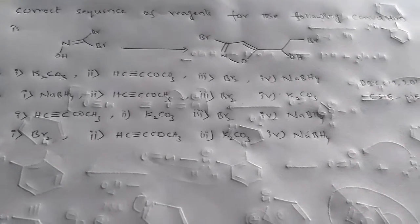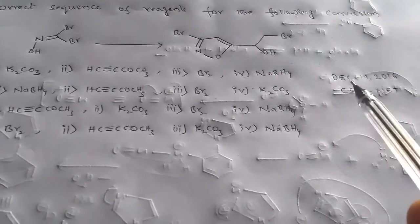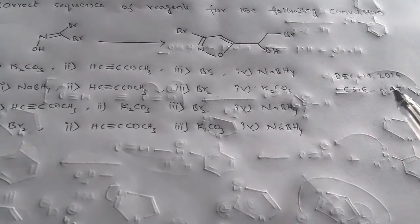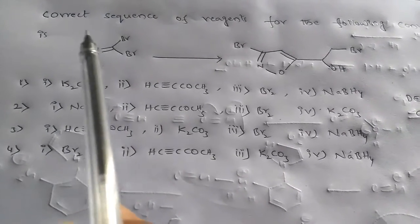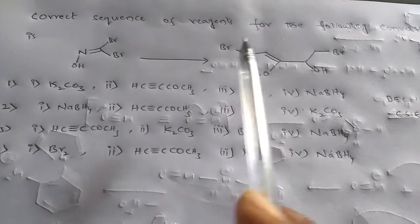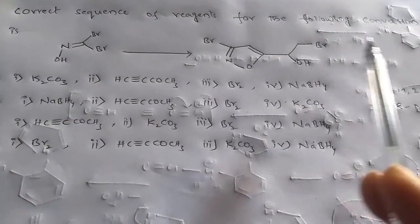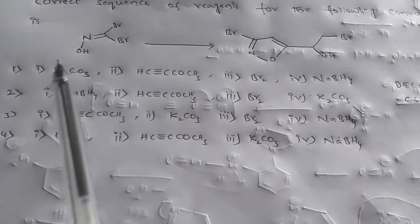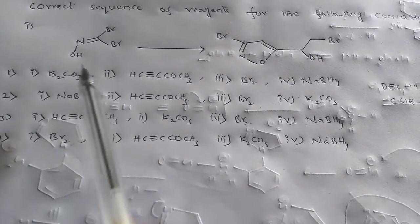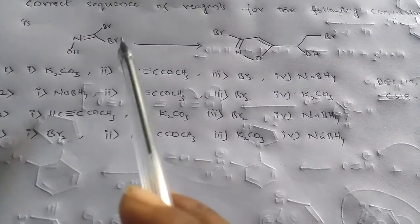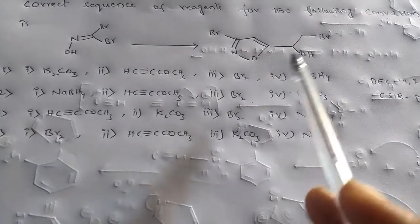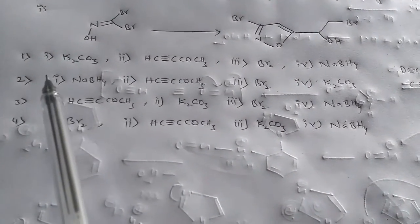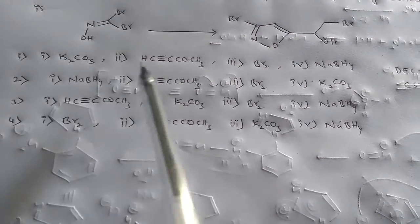This is a challenge question that appeared in December 19, 2016 CSIR NET. The question asks for the correct sequence of reagents for the following conversion — we have this reactant and it is converted to this product.